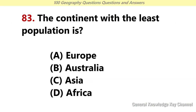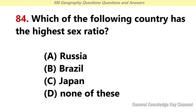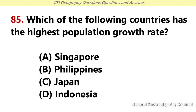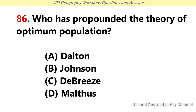The continent with the least population is? Answer B: Australia. Which of the following countries has the highest sex ratio? Answer A: Russia. Which of the following countries has the highest population growth rate? Answer D: Indonesia. Who has propounded the theory of optimum population? Answer A: Dalton.